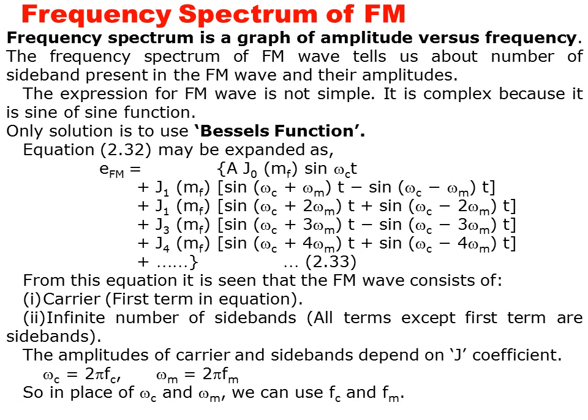Frequency spectrum of frequency modulation: the frequency spectrum is a graph of amplitude versus frequency. When we draw the amplitude versus frequency graph, this is called the frequency spectrum of FM modulation. The frequency spectrum of the FM wave tells us about the number of sidebands present in the FM wave and their amplitude. The expression for the FM wave is complex because it is a sine of a sine function, so the only solution is to use Bessel's function.